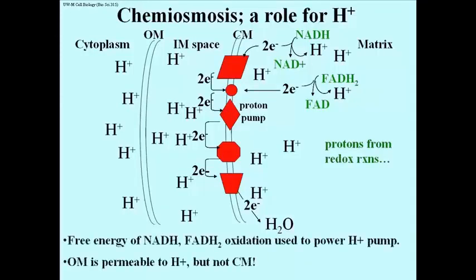Some protons are shown in the cytoplasm in the drawing because the outer membrane, or OM, leaks protons. But the bottom line here is that proton pumps have used the free energy released by the electron transport system redox reactions to create a gradient of protons.